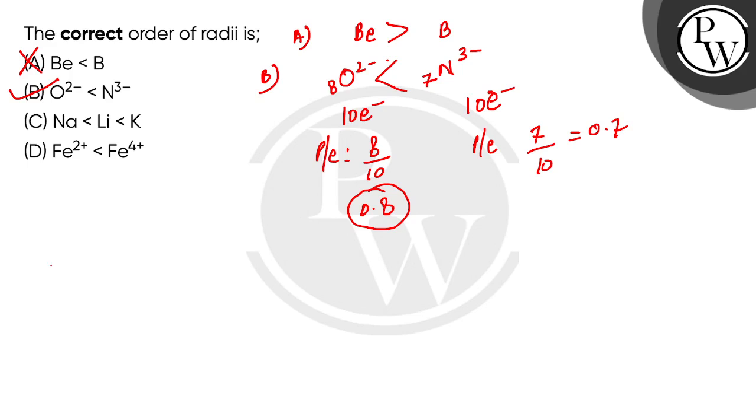In option C, we have sodium, lithium, and potassium—one group of elements. Going down the group, size increases because the number of shells increases and dominates over nuclear charge. So potassium is the biggest and lithium is the smallest. But here it's written incorrectly. This option is wrong.